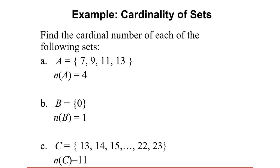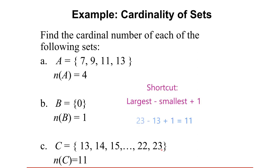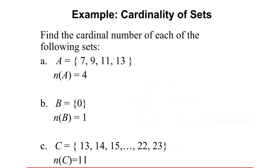Counting from 13 to 23 gives you 11 numbers. If you want a shortcut, subtract: 23 minus 13 is 10, then add 1 because the endpoints are included, giving 11. To avoid confusion, you can just list them down and count everything.